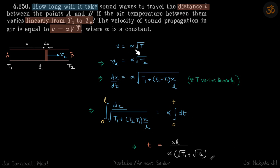Let's start from there. We know velocity is equal to alpha root T. So this is at a distance x, so let's call it Vx equals alpha root Tx. Now because the variation is linear,